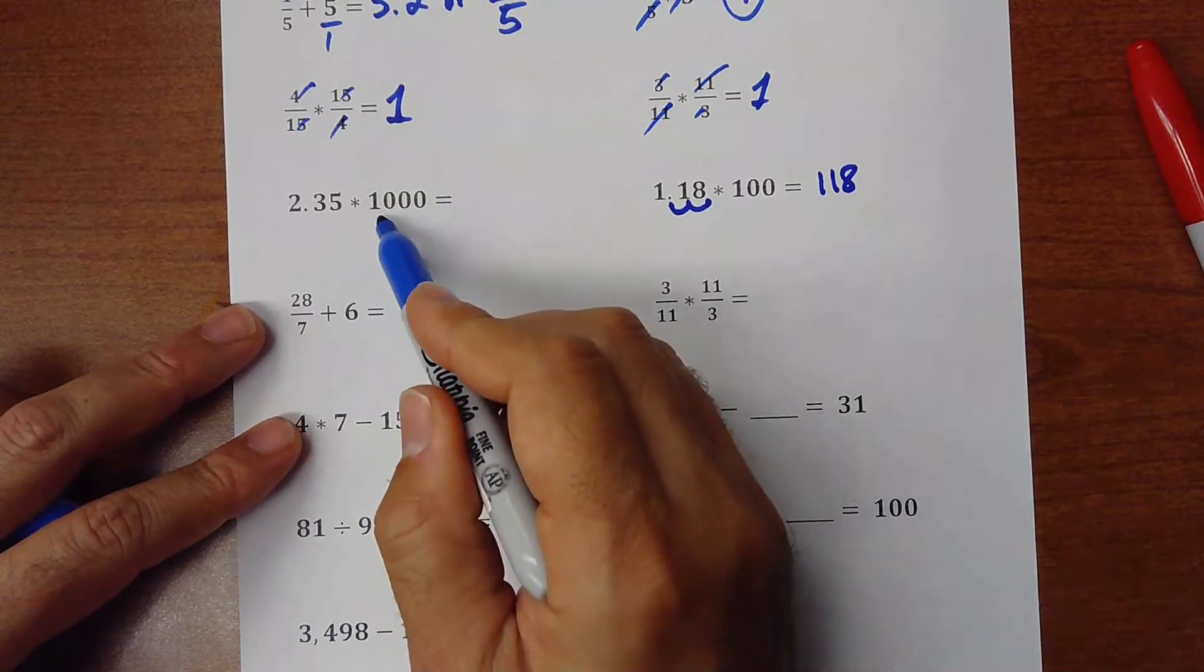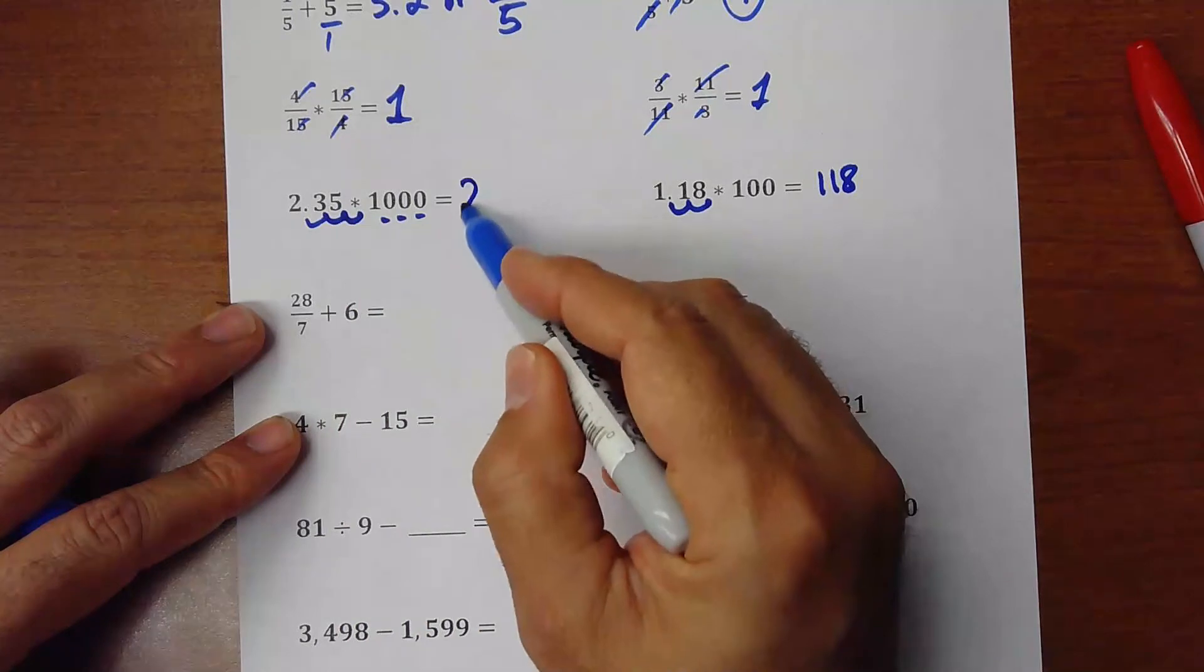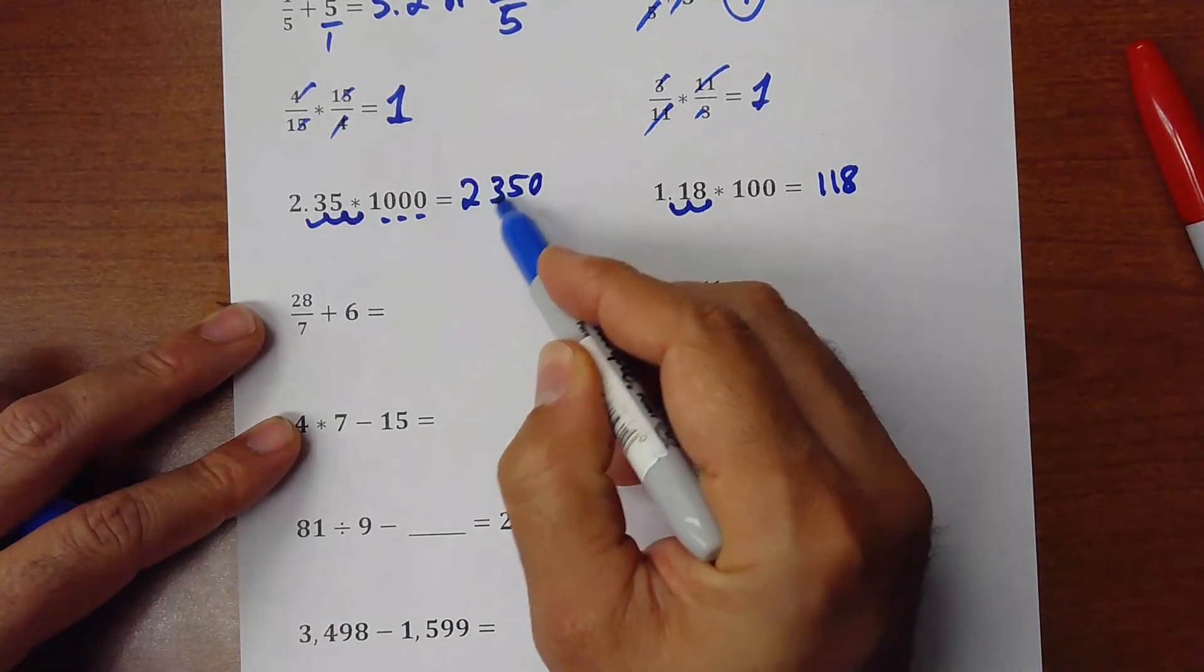Times by 1000. 1, 2, 3, 0. So 1, 2, and 3. When you don't have anything, you put the 0. 2350.